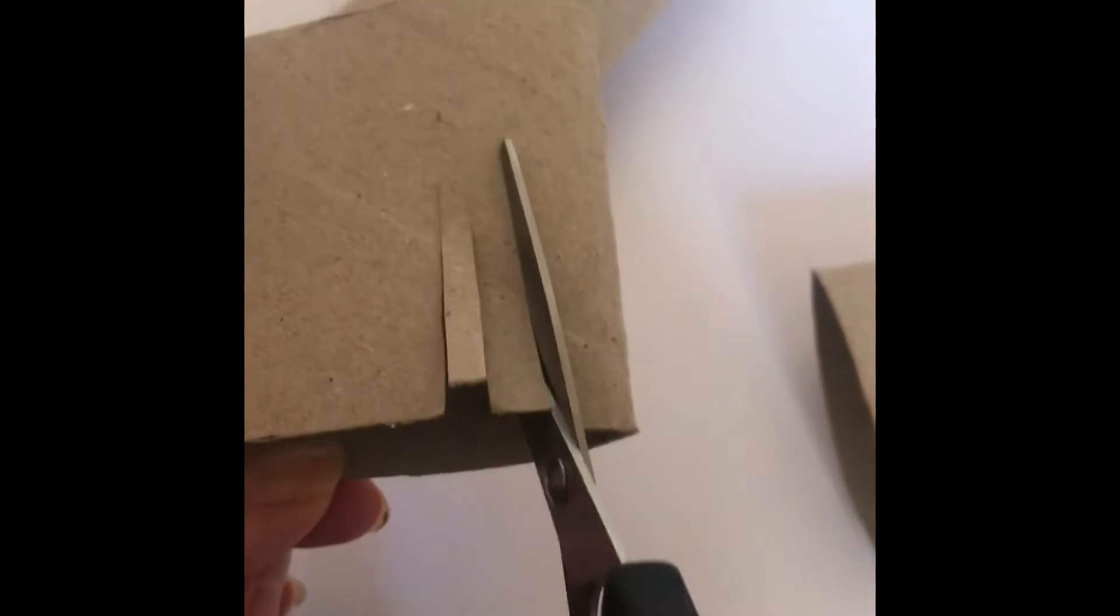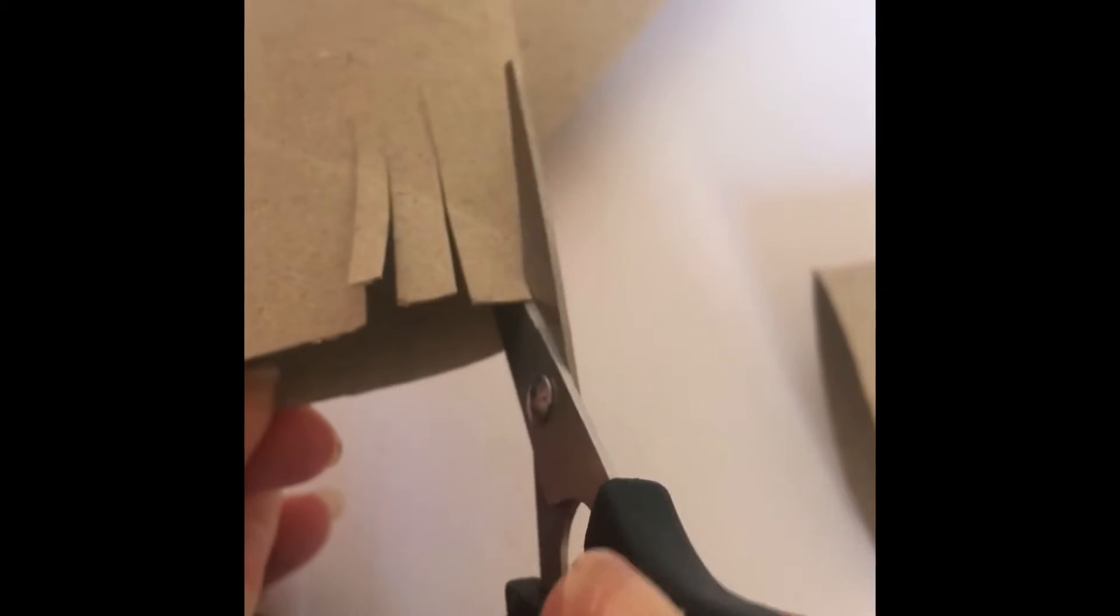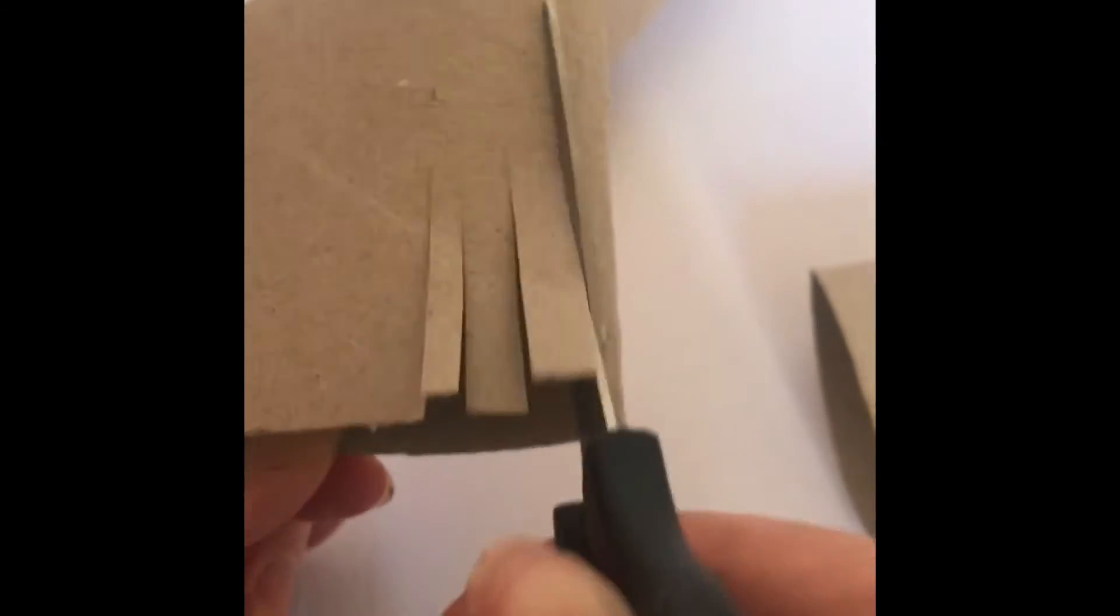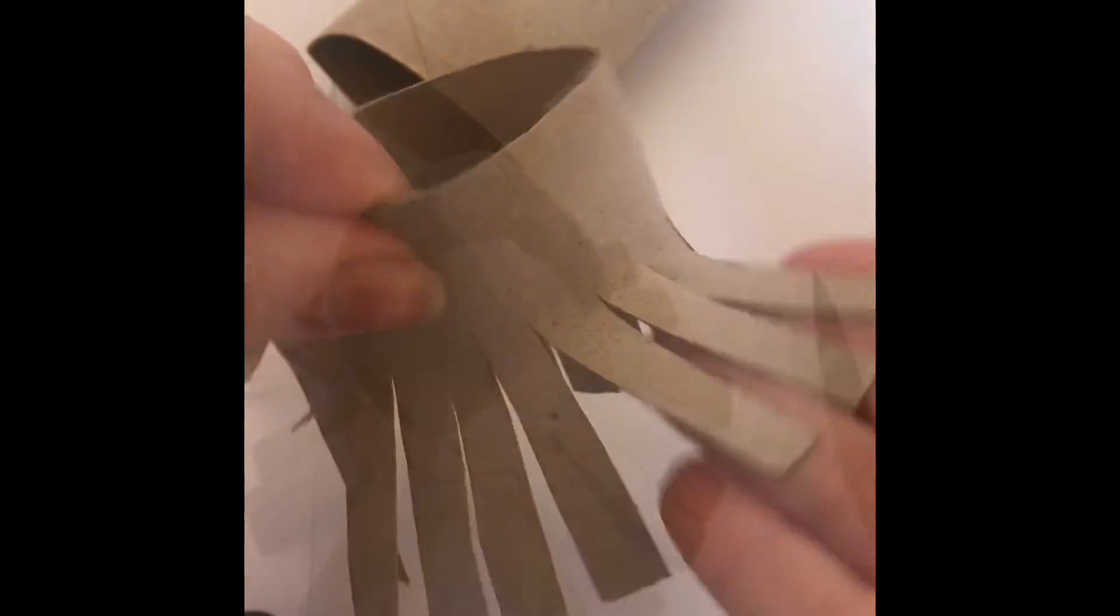Then what we're going to do is cut all around the bottom of it and just create a little fringe. So just go up as high as your first line and just keep going around the whole holder, and then pull it out once you've cut all around it and it'll create this fringe effect.